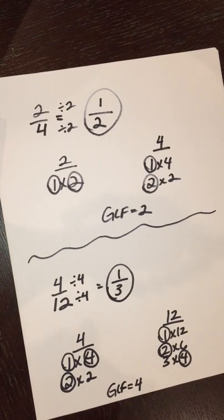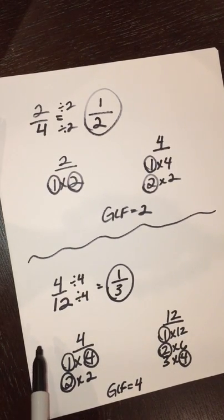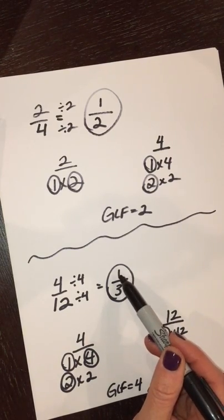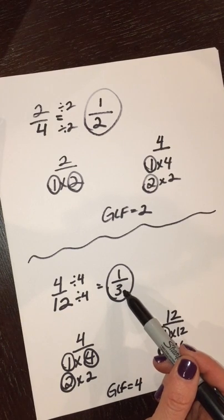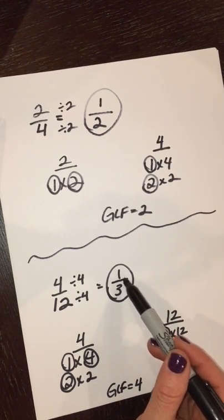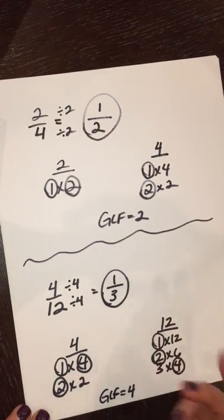It's the same terminology, or the same meaning, just different terminology. Also notice with this number, I can't divide one and three by any other common number. There's no more factors to divide. So that's another way I know that one-third is in simplest form. Also notice that they're both prime numbers.